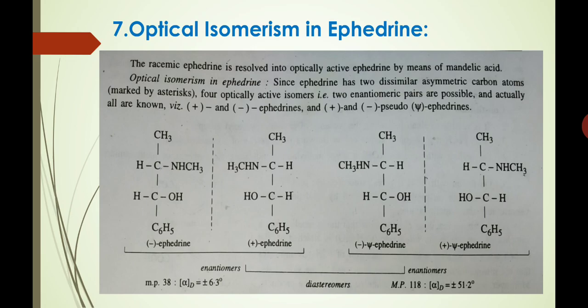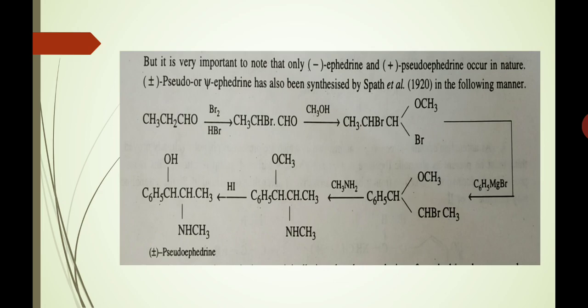These isomers are shown here. On the left-hand side, the pair of enantiomers consists of levorotatory (−)-ephedrine and its mirror image, dextrorotatory (+)-ephedrine. On the right-hand side is the pair of pseudoephedrines: levorotatory (−)-pseudoephedrine and its mirror image, dextrorotatory (+)-pseudoephedrine. It is important to note that only levorotatory ephedrine and dextrorotatory pseudoephedrine occur in nature.